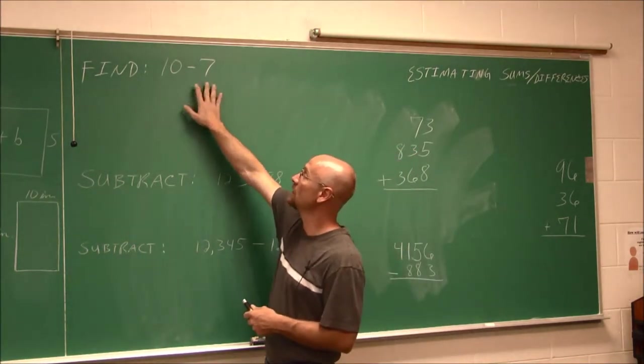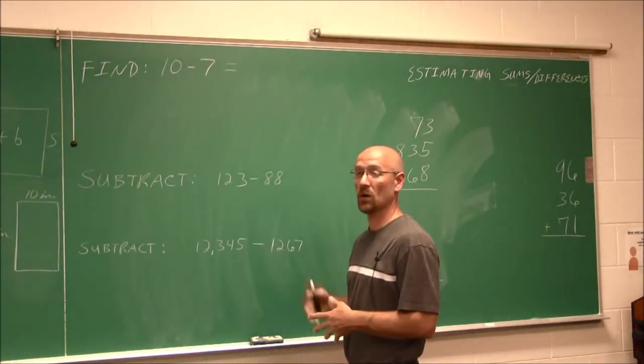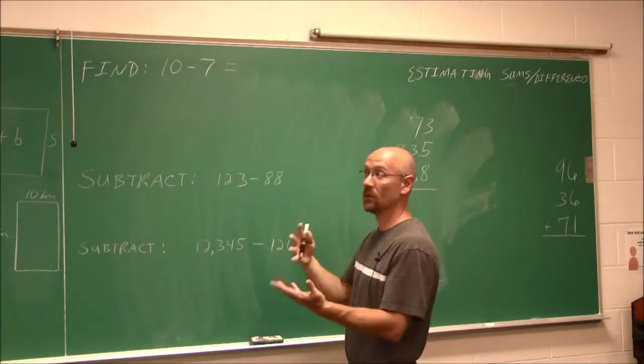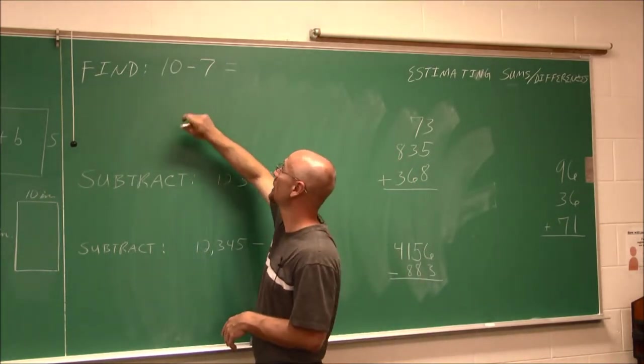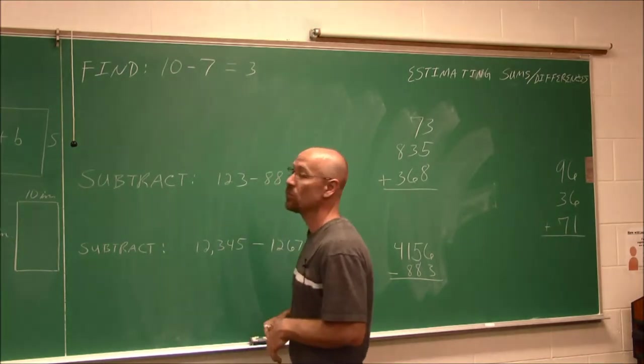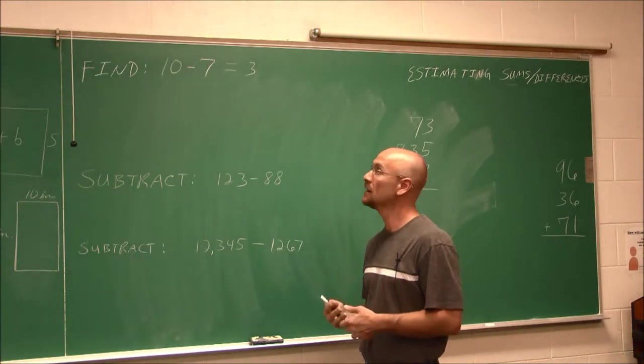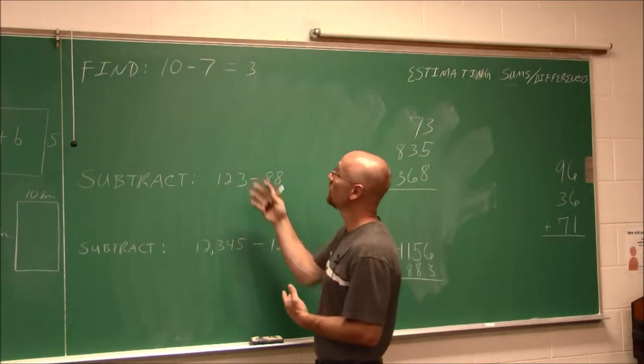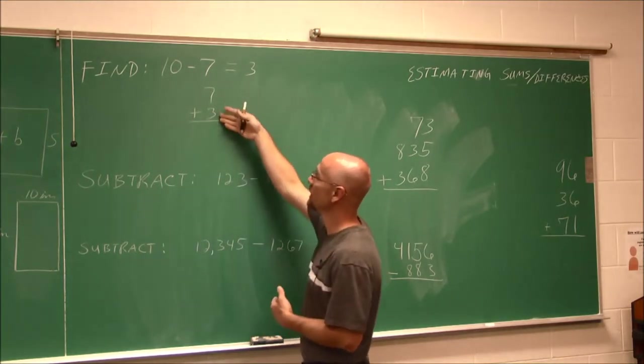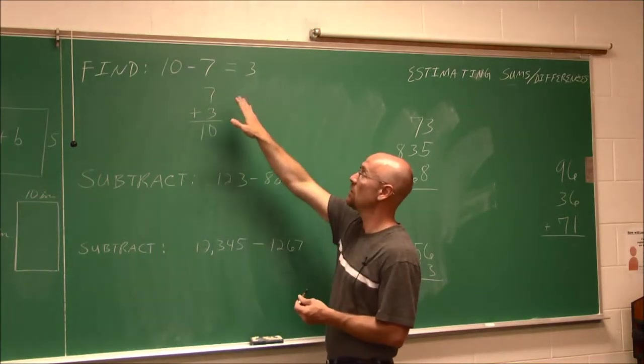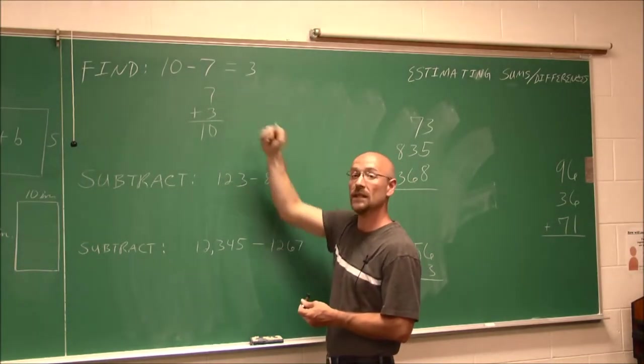So if I want to find 10 minus 7, the difference is what we call the resultant. When we find subtraction, it results in a difference. The difference of 10 and 7 is 3. And since in the previous video we learned about addition, we can actually use that to check our work. So if I say, well, what's 7 plus 3? If I do that addition, I get 10. So I can say 10 minus 7 is 3 because, by definition, 7 plus 3 is 10.